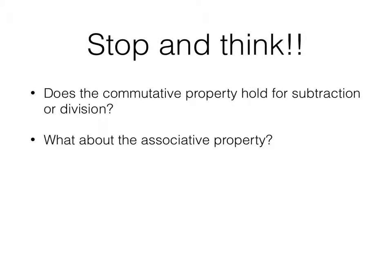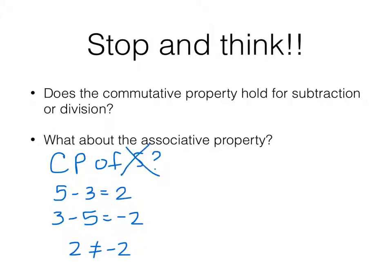Now, let's stop and think about this for just a minute. Does the commutative property hold for subtraction or division? What about the associative property? Well, let's try it. The commutative property of subtraction? 5 minus 3 is 2. Is 3 minus 5 equal to 2? Some of you were telling me that in the beginning, but what you forgot about is negatives. And 2 does not equal negative 2. So no commutative property of subtraction.